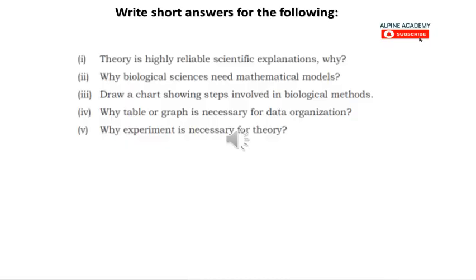Now we have short answers. First: theory is a highly reliable scientific explanation — why? It is highly reliable because it unifies many repeated observations and data collected from lots of experiments. After many experiments and observations, when one consistent conclusion emerges, a theory forms, making it a highly reliable scientific explanation.